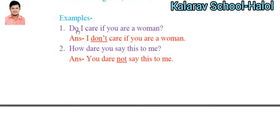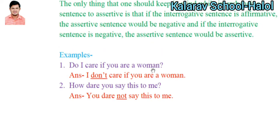Example: 'Do I care if you are a woman?' This is an interrogative sentence, and it is affirmative, so we have to transform it into the negative assertive: 'I don't care if you are a woman.' The same rule which is implemented in the question tag applies here — if the question is in affirmative form, the sentence would be negative.